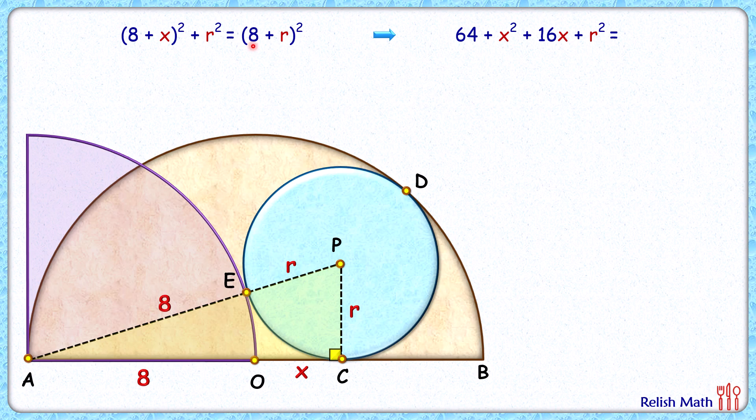We have got two variables, r and x, so we need one more equation to solve for r and x. For that, again if we look at the figure, the blue circle and the semicircle are touching each other at point D. So we'll apply our same identity: their centers, that is point O and P, and the point of contact, that's point D, they all three will lie in a straight line.